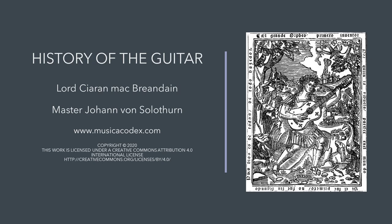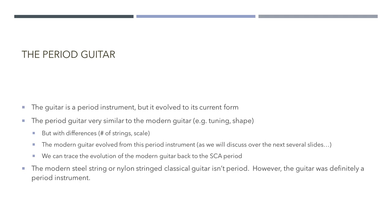If you look at the image on this page, you will see Orpheus in El Maestro by Louis Milan in 1536. This image shows Orpheus playing something that looks incredibly like a guitar — an instrument with a long neck, a straight peg head, a flat back, and a classic figure-eight shape. He's playing what's called a viola. So to start off with a basic statement: the guitar is a period instrument.